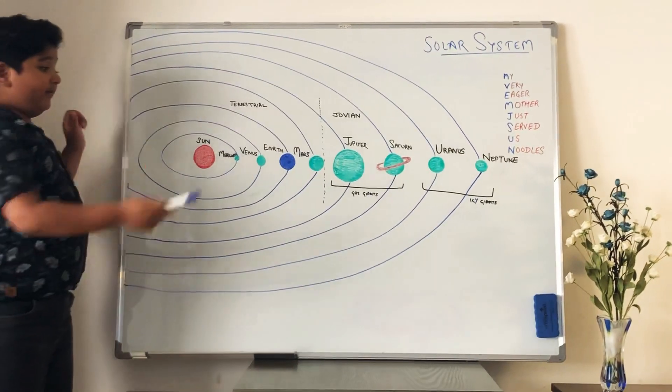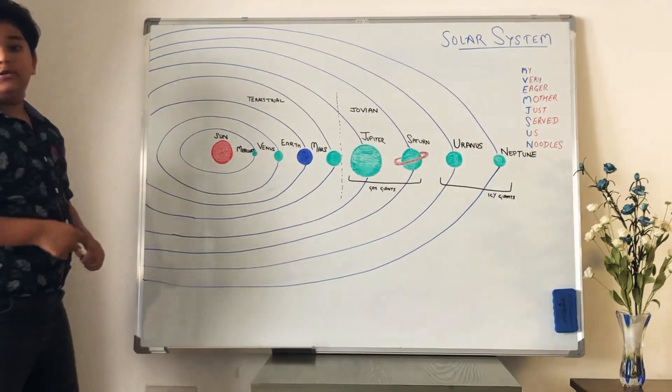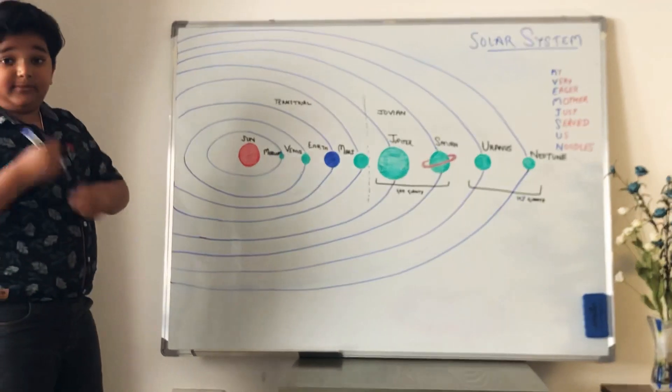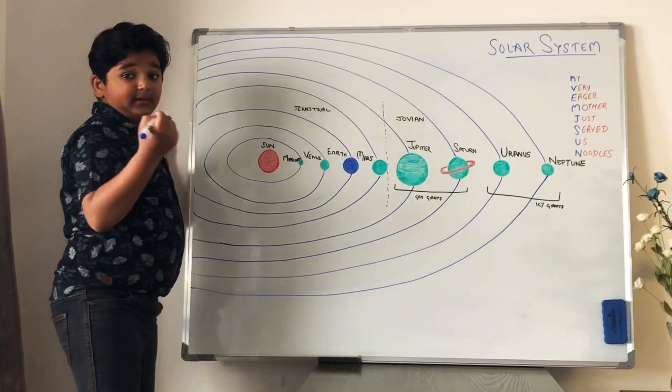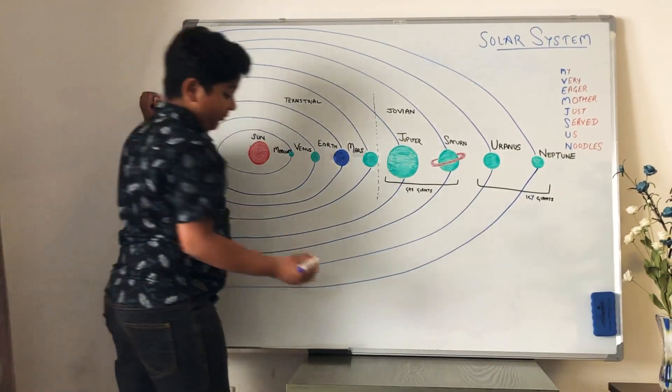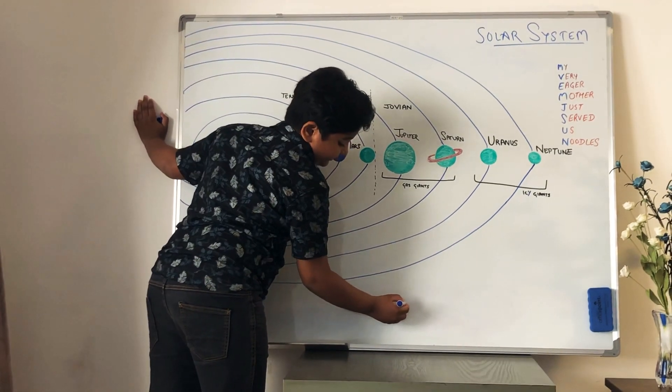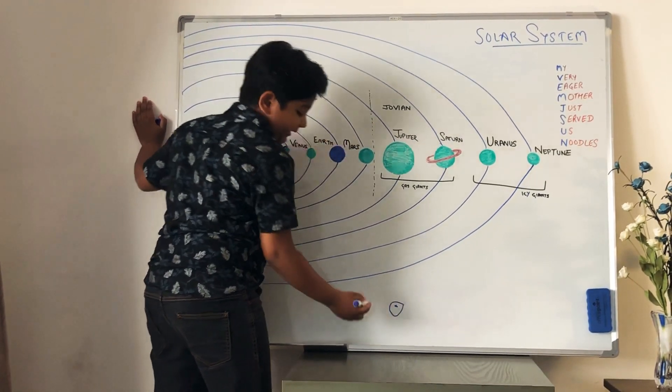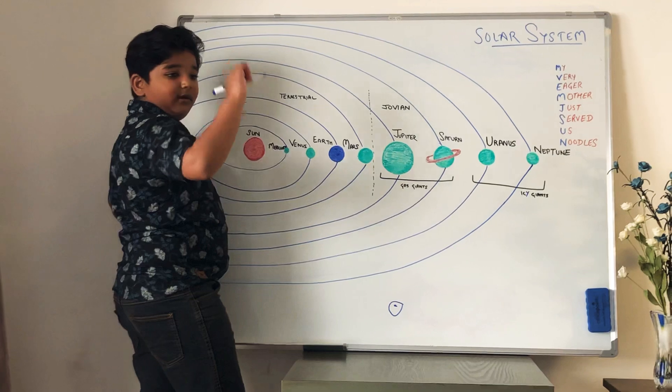And they move in an elliptical orbit. And let me tell you what an elliptical orbit and what a circular orbit is. A circular orbit is this, like a circle, circle round.